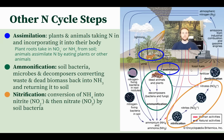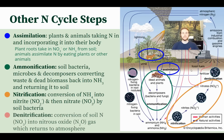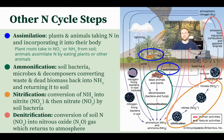Finally, we have denitrification — the conversion of soil nitrogen, specifically nitrate, back into a gas form. However, this is going to be the gas form nitrous oxide, or N2O. This is converted again by bacteria, released into the atmosphere, and eventually that nitrous oxide can break down to form nitrogen gas, completing the cycle.